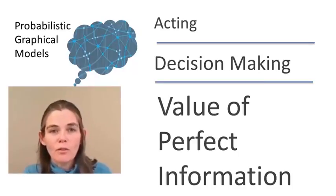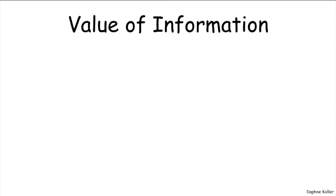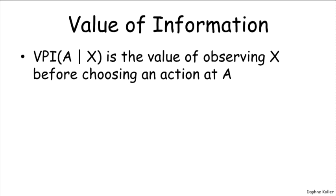It turns out that the same framework of influence diagrams can also be used to answer that question using rigorous formal foundations. How do we provide a formal semantics for the notion of the value of getting information, or the value of making an observation? The formal definition is the value of perfect information. VPI about a variable X is the value that we have by observing X before choosing an action A, where perfect means we observe X without any noise.